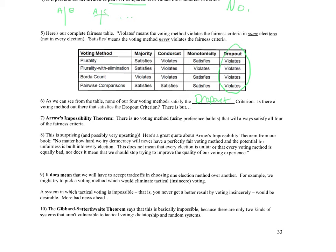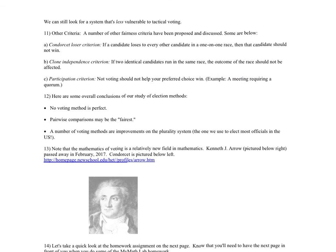Looking back at the table, pairwise comparisons satisfies three of the four criteria. So we can still look for a system that is less vulnerable to tactical voting.